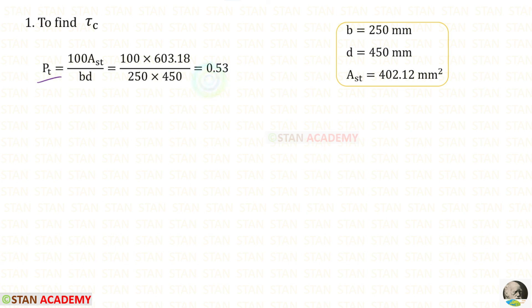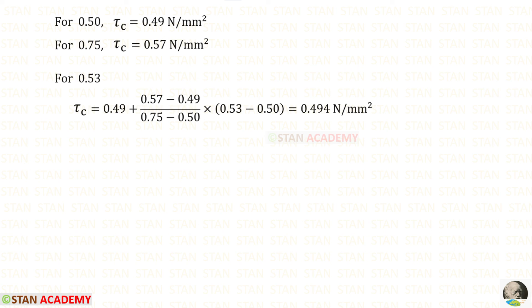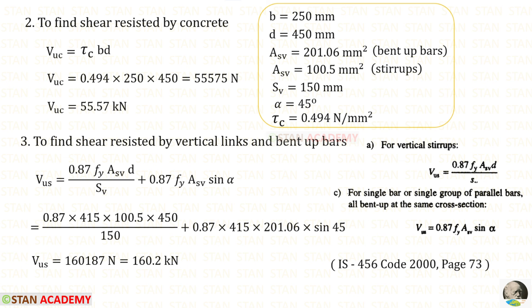For Pt, we will get 0.53. 0.53 comes between 0.5 and 0.75. Our FCK is 25. So, we have to select these two values. By using interpolation, we can find τc for 0.53. Then, we can find VUC. For that, we will get 55.57. Then, we can find VUS. For that, we will get 160.2.